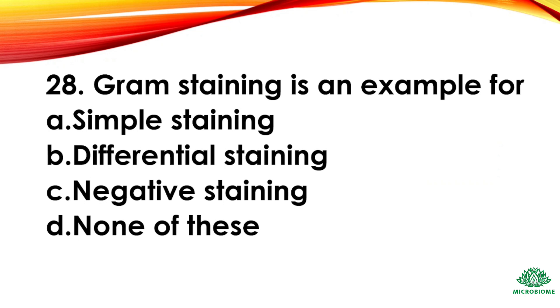Question 28: Gram staining is an example of — options: simple staining, differential staining, negative staining, none of these. The right answer: option B, differential staining.